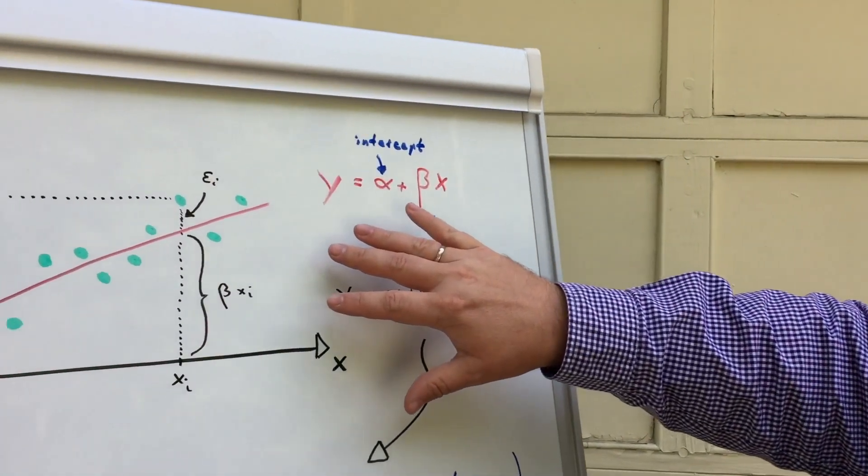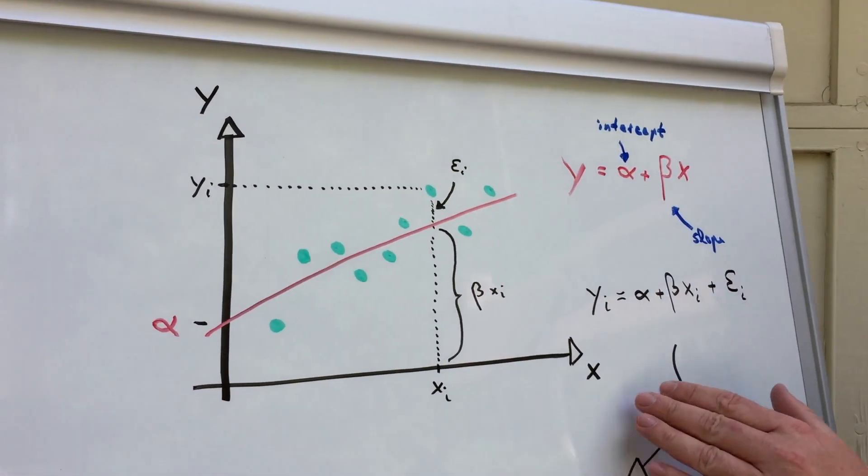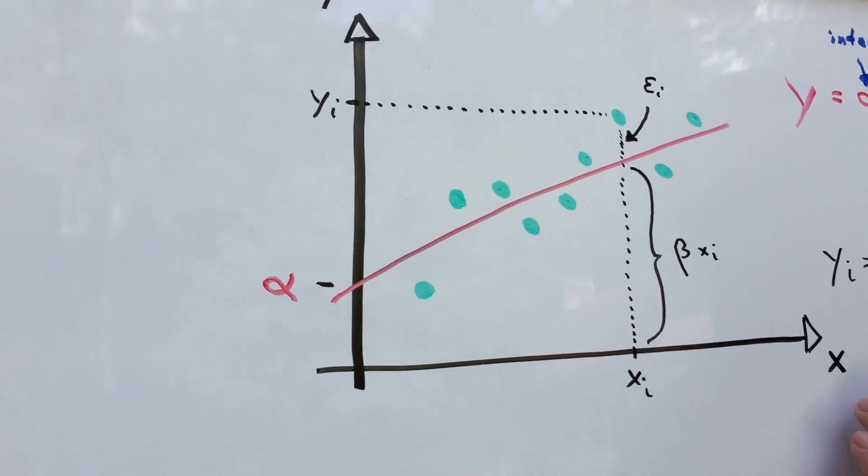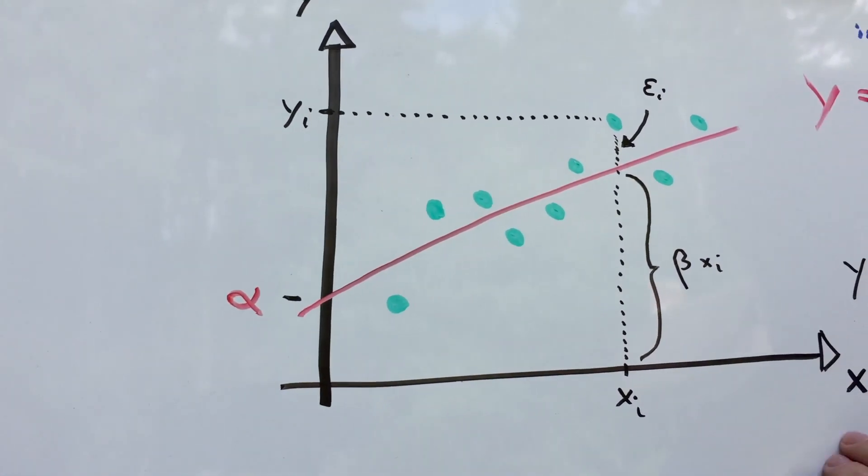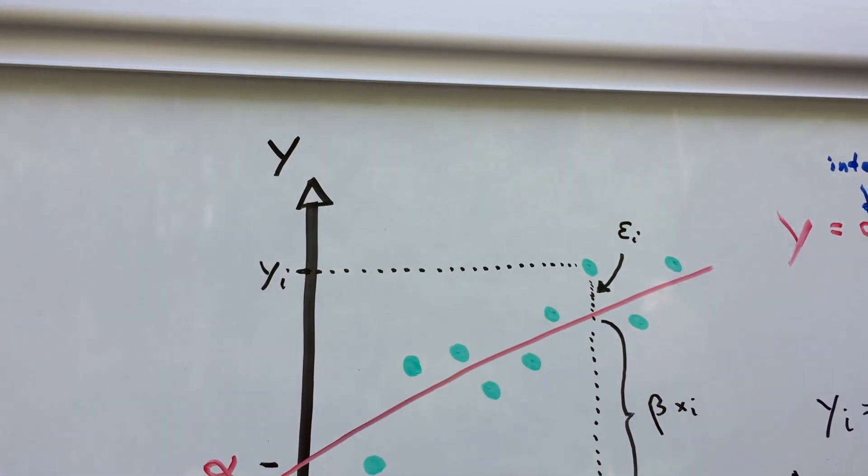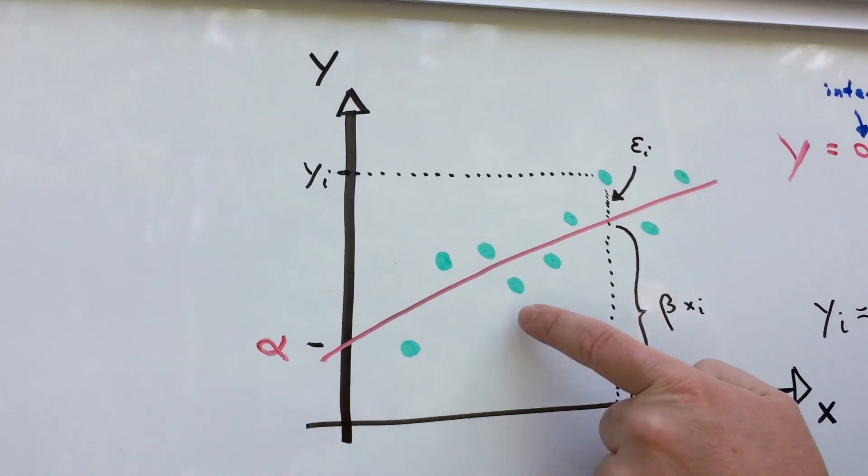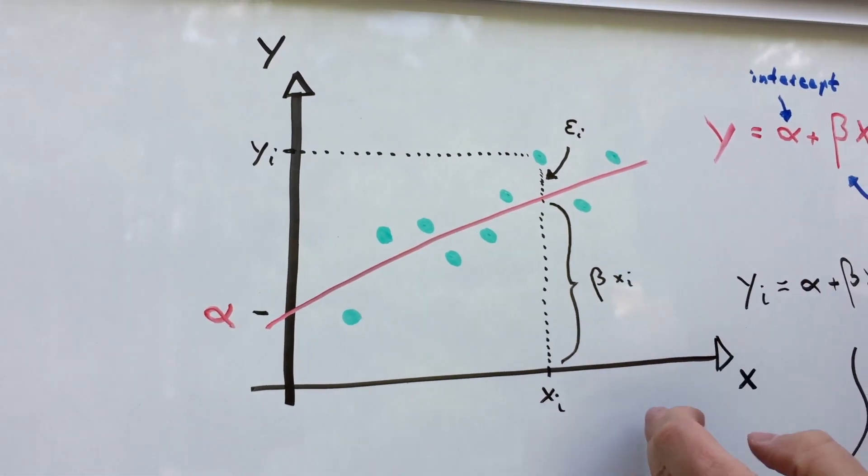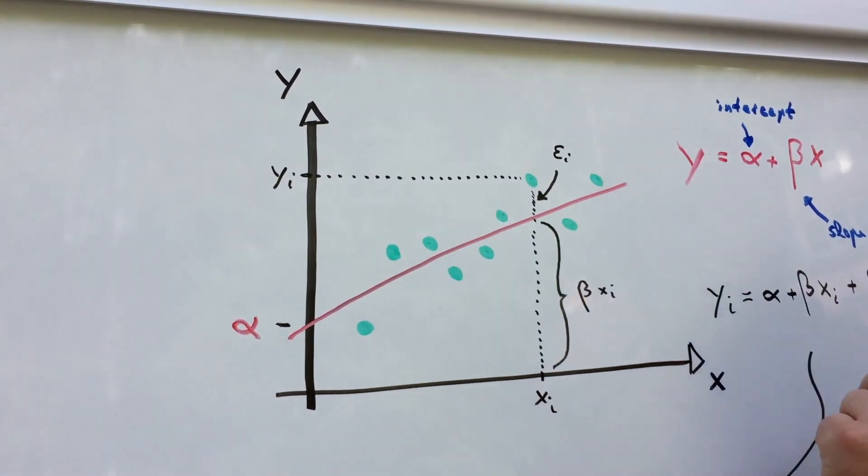Okay, let's see how this algorithm works then. So here again, we have our data space, two dimensions. Just for now, we only have like one dimension x at the bottom here, and this is the dimension y we want to predict. Here are our green data points.